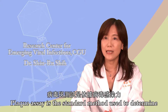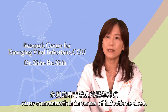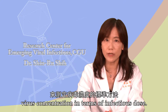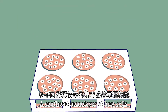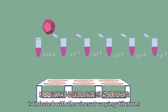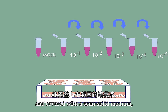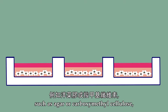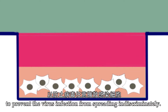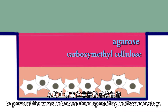Plaque assay is the standard method used to determine virus concentration in terms of infectious dose. A confluent monolayer of host cells is infected with the virus at varying dilutions and covered with a semi-solid medium, such as agar or carboxymethyl cellulose, to prevent virus infection from spreading indiscriminately.